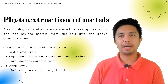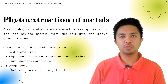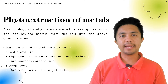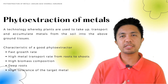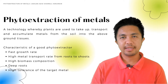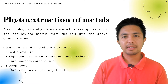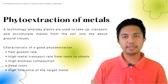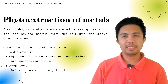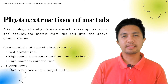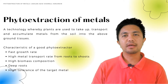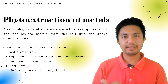Phytoextraction can be defined as a technology whereby plants are used to take up, transport and accumulate metals from the soil into the above-ground tissues. In order to achieve an efficient phytoextraction rate, the plants are required to have attributes such as fast growth rate,